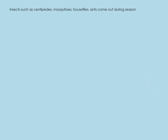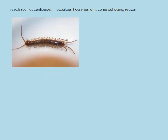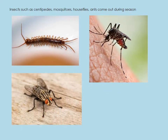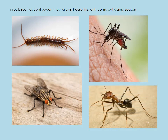Insects such as centipedes, mosquitoes, house flies, and ants all come out during the rainy season. They also spread a lot of diseases, so one has to be careful during the rainy season.